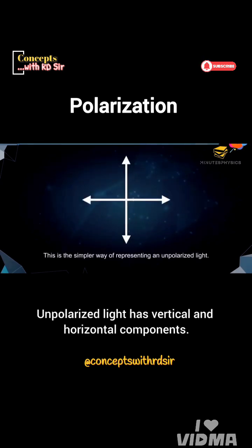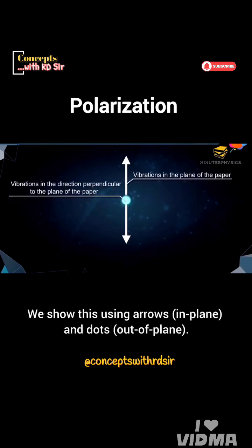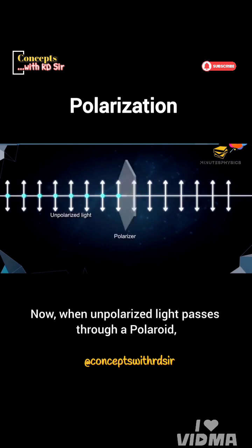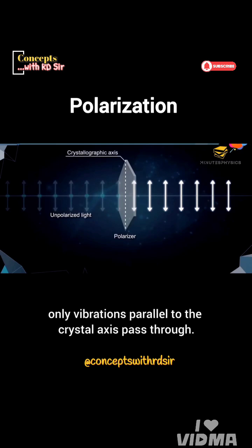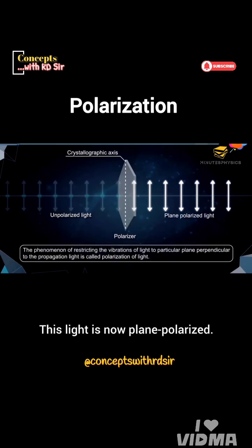Unpolarized light has vertical and horizontal components. We show this using arrows in-plane and dots out-of-plane. When unpolarized light passes through a polaroid, only vibrations parallel to the crystal axis pass through. This light is now plane polarized. This process is called polarization.